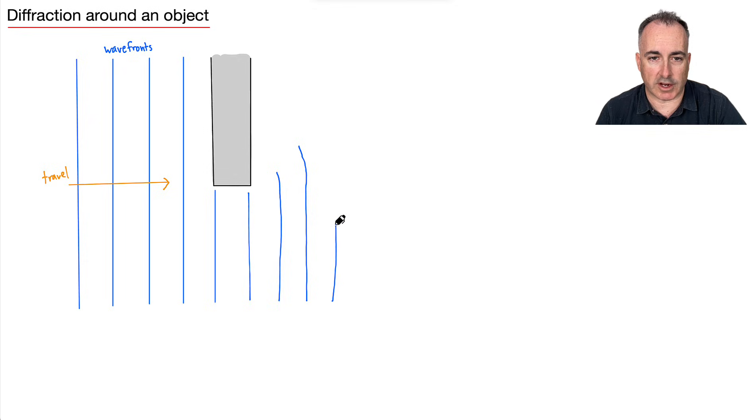So this is also diffraction. Diffraction can also happen sort of around an object. I'm just not a great artist, but I hope you understand the idea here. So these wave fronts are here. They do kind of curve around an object like this as they go to the right.